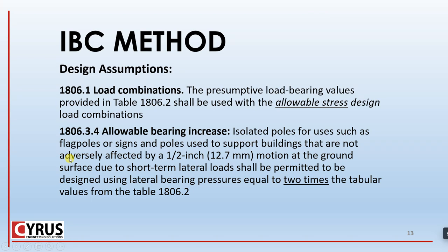The second assumption concerns increasing the load-bearing pressure. Isolated poles for uses such as flag poles or signs — and poles used to support buildings — that are not adversely affected by half an inch (12.7 mm) of motion at the ground surface due to short-term lateral load shall be permitted to be designed using lateral bearing pressure equal to two times the tabular values from Table 1806.2. Simply put, if your structure is okay with half an inch of displacement at the ground level, you can double the lateral bearing pressure.